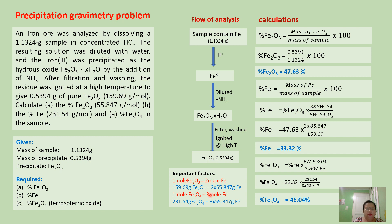This is also equivalent to 2 times the molar mass of iron. The molar mass of iron is 55.847 grams per mol. Also for ferrozoferic oxide, 1 mol of ferrozoferic oxide contains 3 mols of iron, and 1 mol of ferrozoferic oxide is equal to 231.54 grams. This is equal to 3 times the molar mass of Fe.